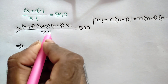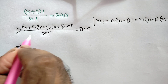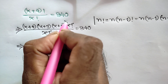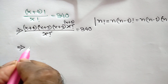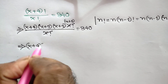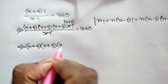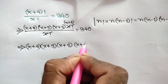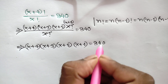This x! cancels with this x!, so we will get (x+4) times (x+3) times (x+2) times (x+1) is equal to 840.